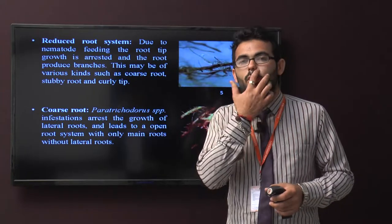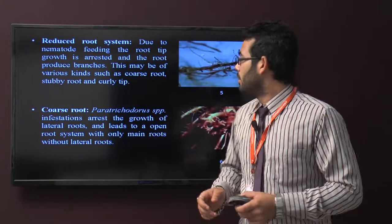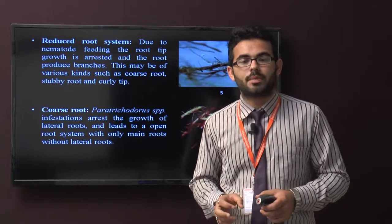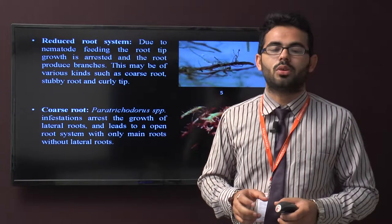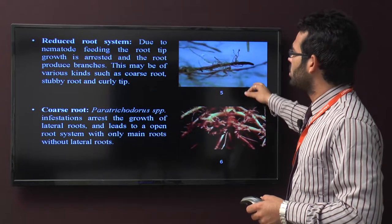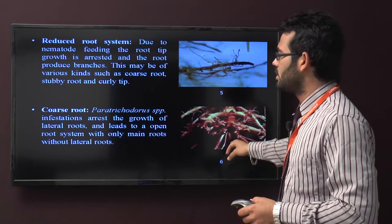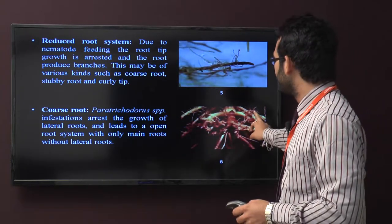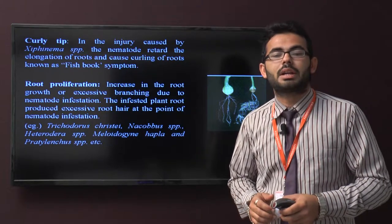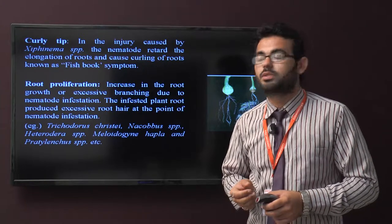This may be of various kinds such as coarse roots, stubby roots, and curly tips. Coarse roots occur when Paratrichodorus species arrest growth of lateral roots, leading to root systems with only major roots without lateral branches. You can see both figures showing reduced root systems with stunted growth. Curly tips occur when injury is caused by Xiphinema species. The nematode retards elongation of roots causing curling, also called fishhook symptom.